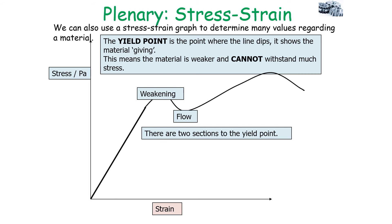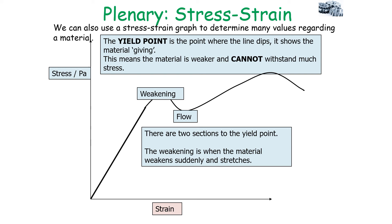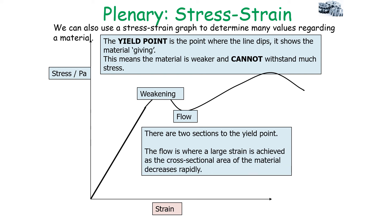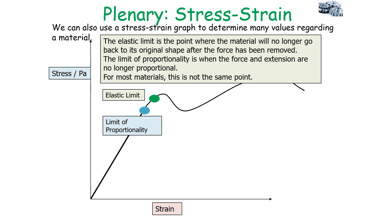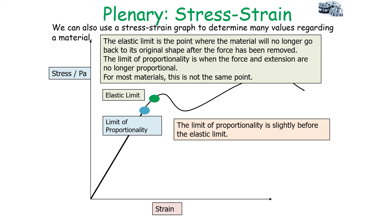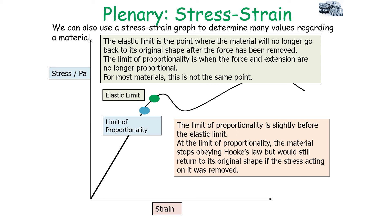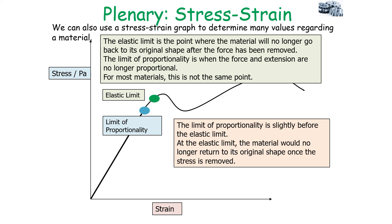The yield point has two sections: the weakening, where the material weakens suddenly and starts to stretch, and the flow, where a large strain is achieved as the cross-sectional area of the material decreases rapidly. The elastic limit is the point where the material will no longer return to its original shape after the force is removed. The limit of proportionality is when force and extension are no longer proportional — slightly before the elastic limit. At the limit of proportionality, the material stops obeying Hooke's law but would still return to its original shape if stress were removed.